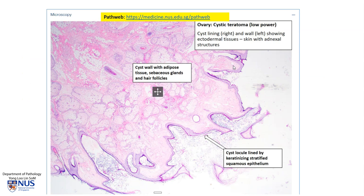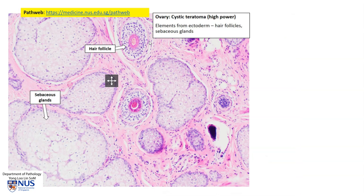Microscopically, they can contain many elements. Very often they have skin and adnexal elements. Here is the epidermis, which is stratified squamous epithelium, and these are all the sebaceous glands. Often these cyst locules accumulate a lot of oily material because of secretions from the sebaceous glands. We can also see some hair follicles here, and here is a closer-up example where you can see the hair follicles with the hair shaft in the middle. And these are the sebaceous glands.